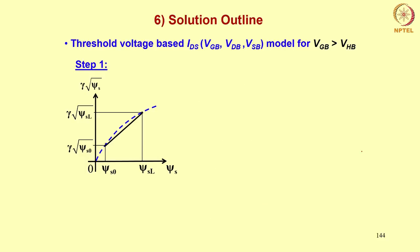Let us look at that linear approximation. Here we have sketched γ√ψs as a function of ψs. The shape is non-linear as shown. Now, if I take a segment of this non-linear function, I could approximate it by a straight line. In a MOSFET, at the source your surface potential is ψs0, and at the drain your surface potential is ψsL. So this is the regime of interest.